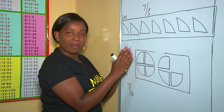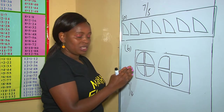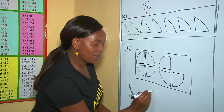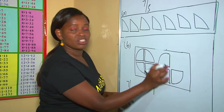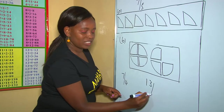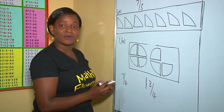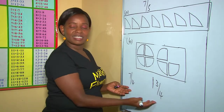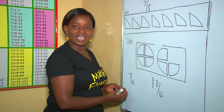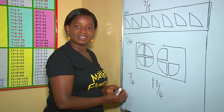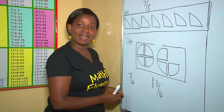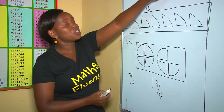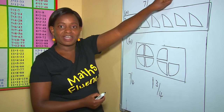Therefore, these 4 here makes 1 whole. So, this one will be 1 whole and 3 quarters. And therefore, my question is, are they the same? Are they equal? And this brings us to the concept of changing improper fractions to mixed fractions.